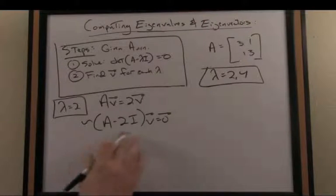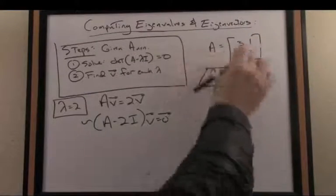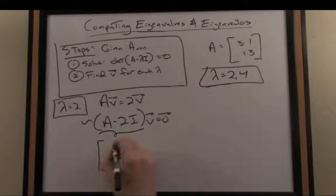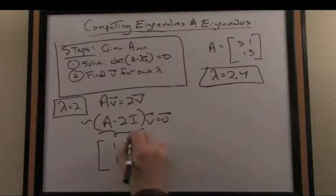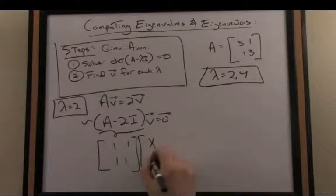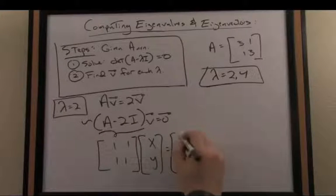Let's investigate now the expression inside parentheses. So what is A minus 2 times the identity? Effectively, I'm going to subtract 2 from the main diagonal here from A. So 3 minus 2 is 1, 3 minus 2 is 1. So that expression is equivalent to the 2 by 2 matrix of all ones. Now the goal for us is to solve for v, so I'll just plug in components. Let's say x times y, there's my v vector, equals 0, 0.